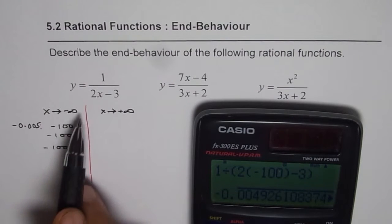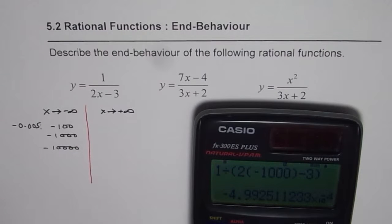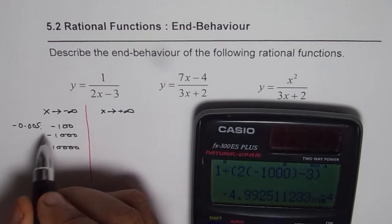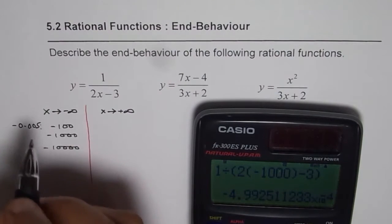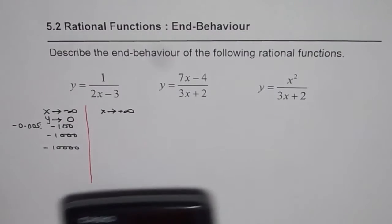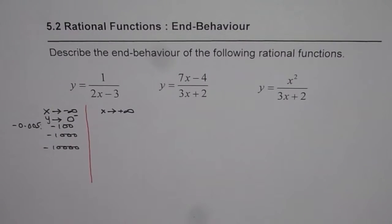Now if I substitute negative 1,000, we get 1 divided by (2 times negative 1,000) minus 3, which gives minus 4.9 times 10 to the power of minus 4. So it is even smaller. What we see is that as x approaches negative infinity, y approaches 0. These values are very, very small. You can use your calculator to verify. The minus indicates it approaches 0 from the negative side.